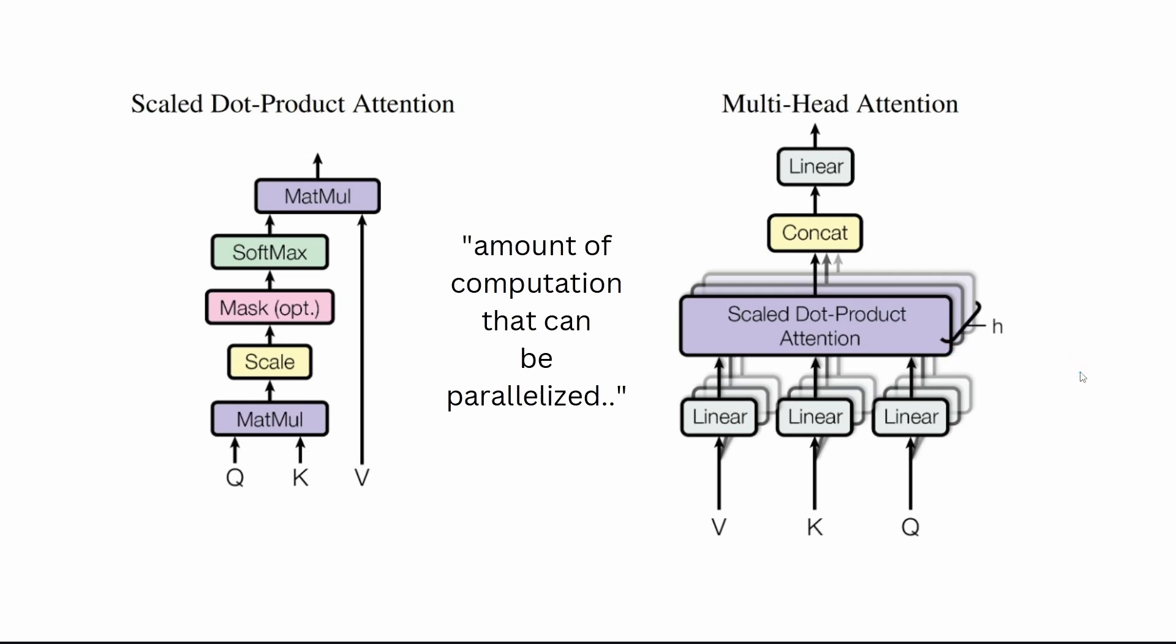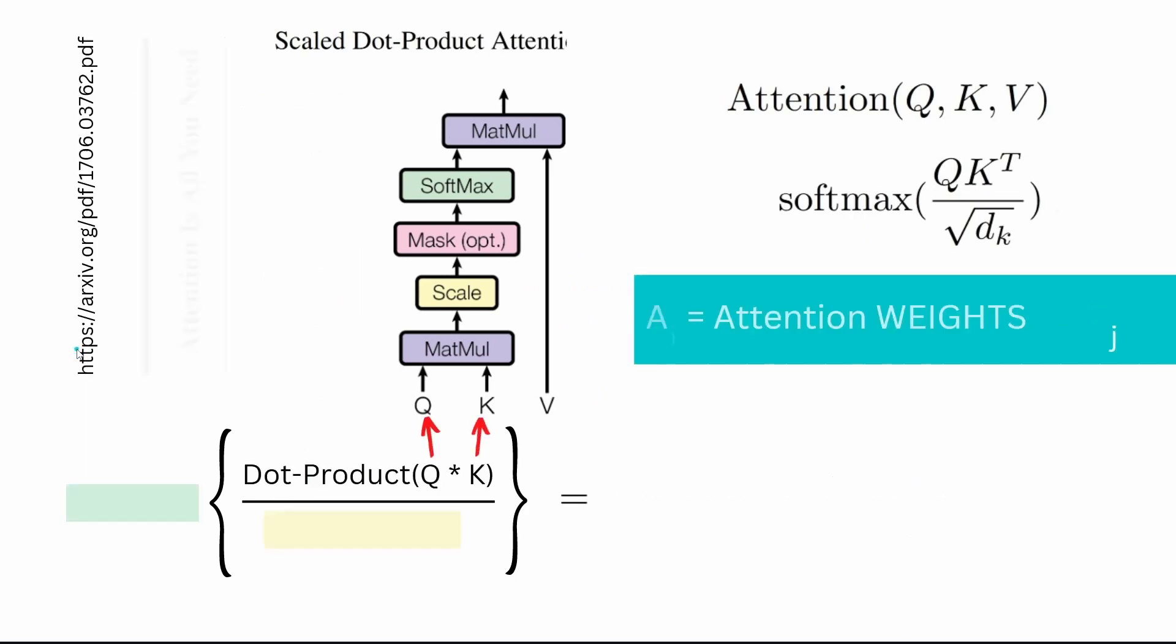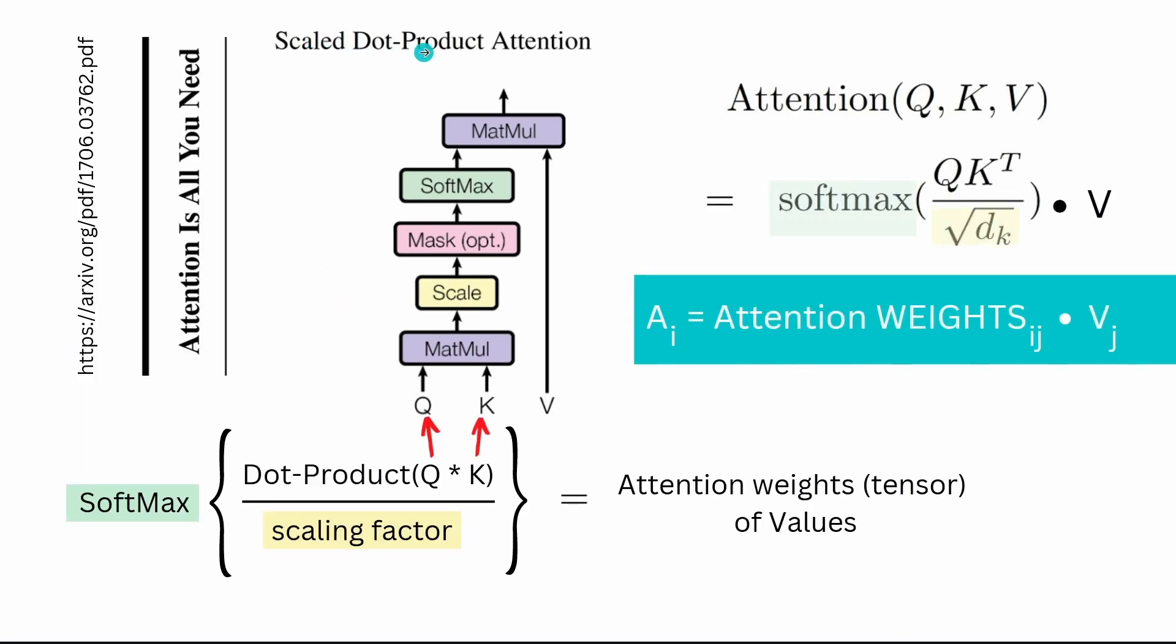This was the easiest explanation and visualization I can think of for the scaled dot product attention from attention is all you need that we will find everywhere in encoders in our transformers. Thank you and I see you in the next one.